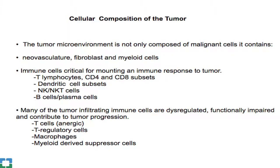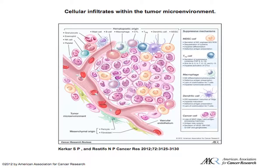The tumor is not just tumor cells — there are fibroblasts, myeloid cells, and various immune cells. It turns out that many of the cells infiltrating the tumor are dysregulated, functionally impaired, and contribute to tumor progression. It was originally thought these infiltrating cells were promoting an anti-tumor response, but it turns out many are there to promote the tumor — the opposite of what was originally thought.